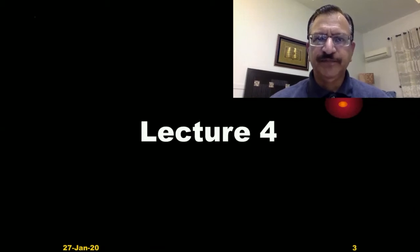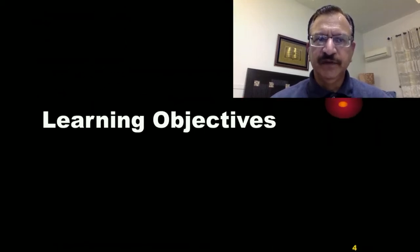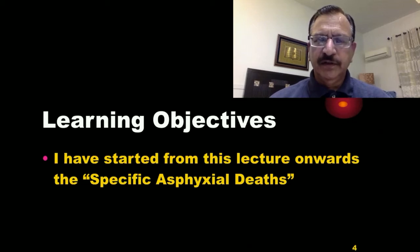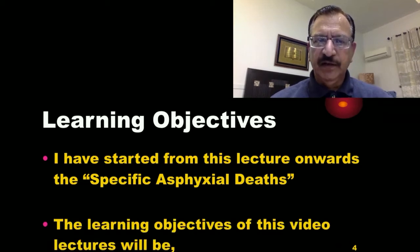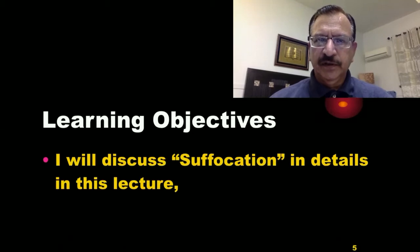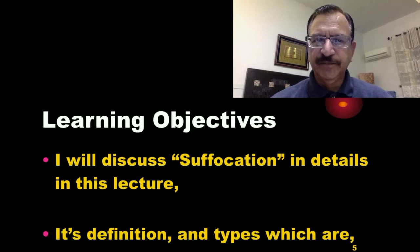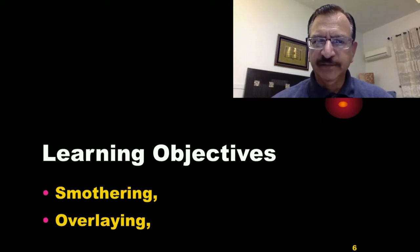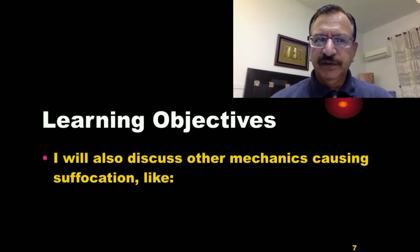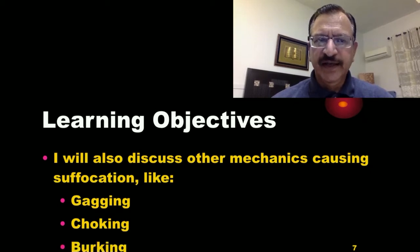Starting with lecture number four on asphyxia. The learning objectives of this lecture will be that from now onward we will be discussing specific asphyxial deaths. The learning objective of this video lecture will be to discuss suffocation in detail — its definition and its types, which are mainly smothering and overlaying. I will also discuss other mechanics causing suffocation like gagging, choking, and burking.